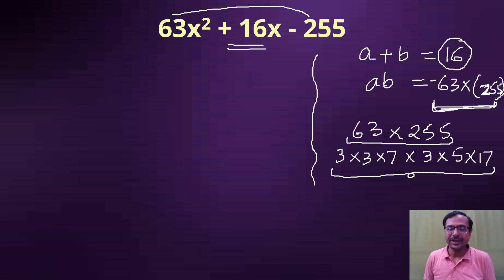So if I have the first four factors: 3 × 3 × 7 × 3, this is going to give me 27, and 27 times 7 is 189. And the other two are going to give me 85. Now you can see the factors are 189 and 85, and they are not going to give me a sum or difference of 16.